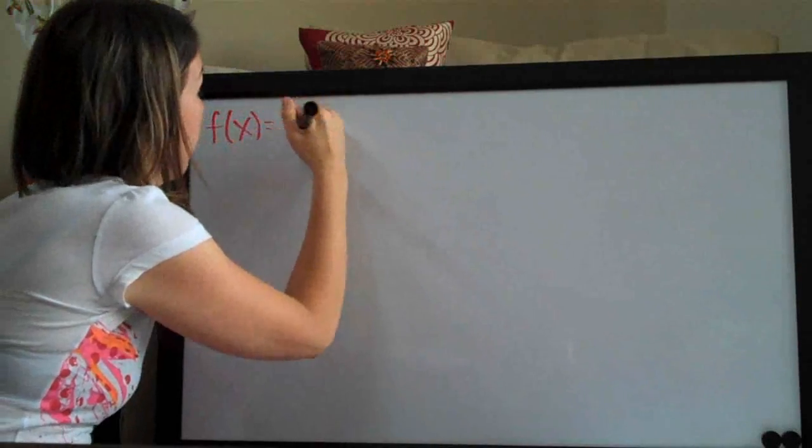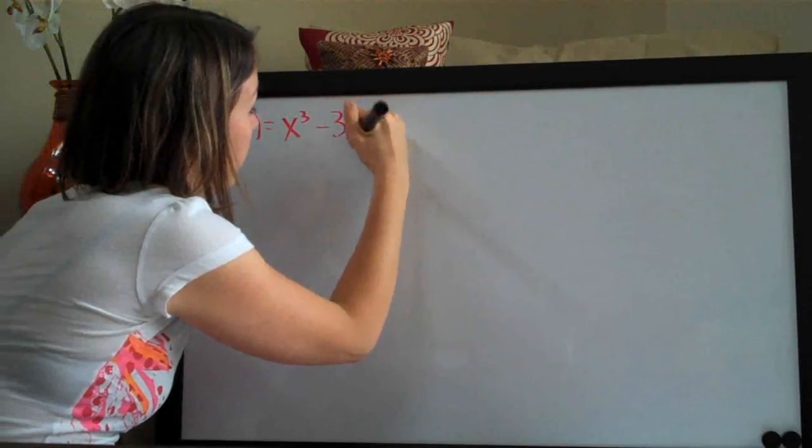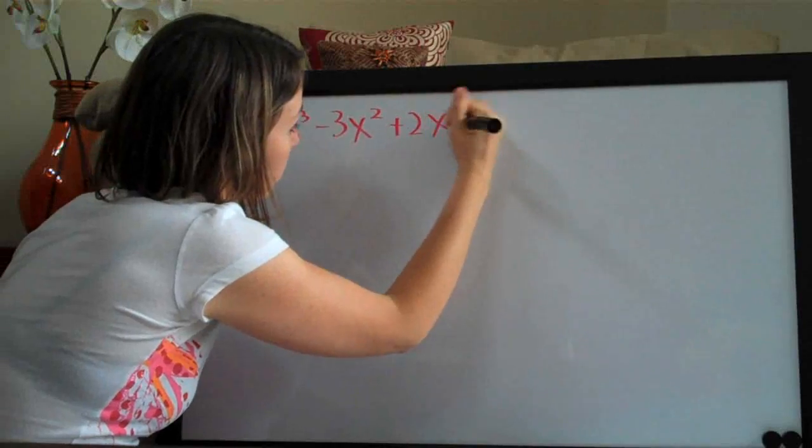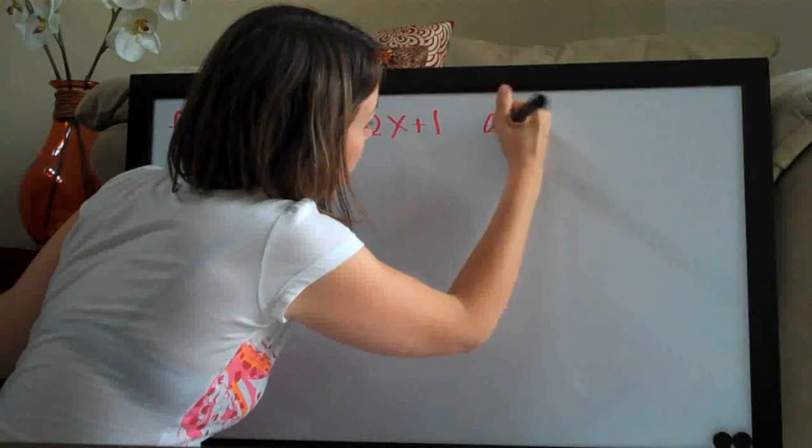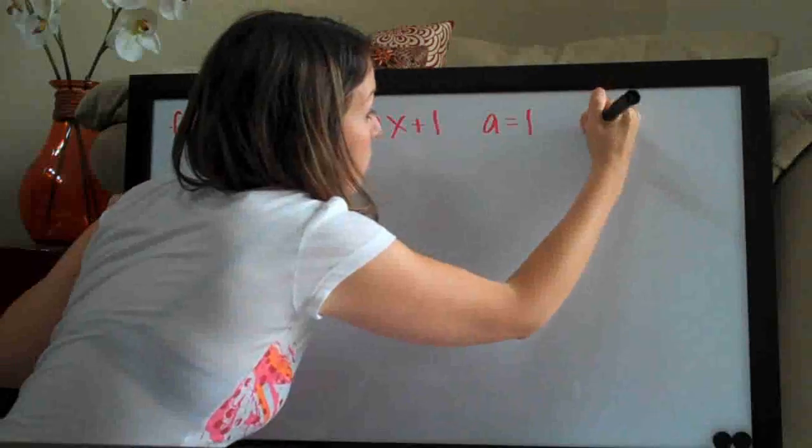So the function that they give us is f of x equals x cubed minus 3x squared plus 2x plus 1 and they tell us that a equals 1 and n equals 3.